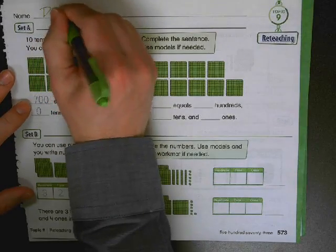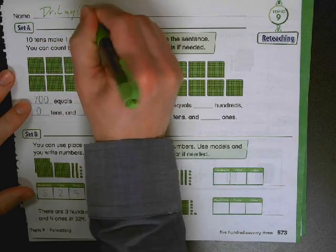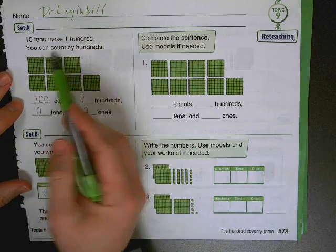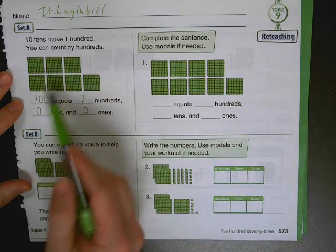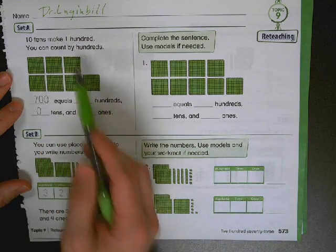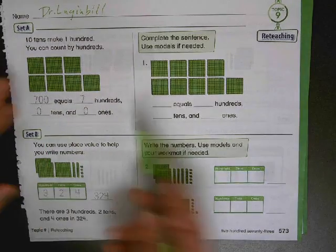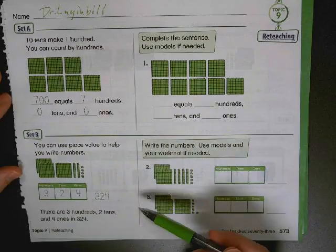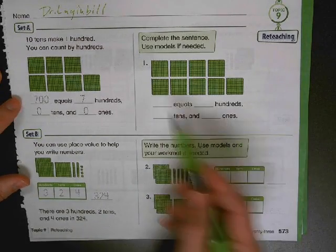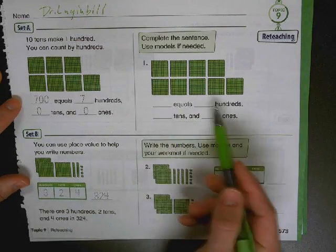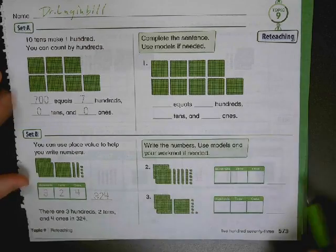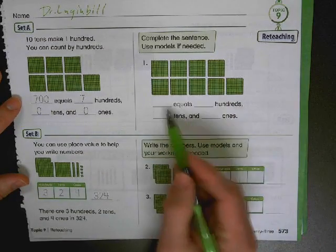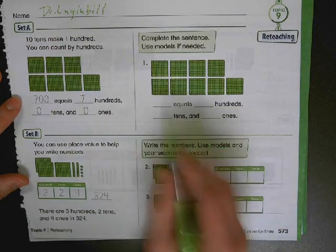Taking a look here, it says 10 hundreds make 1,000. You can count by hundreds: 100, 200, 300, 400, 500, 600, 700. Now 700 equals — it's asking you how many hundreds, how many tens, and how many ones. So it's just asking you what it equals and then how many hundreds, how many tens, and how many ones — pretty straightforward.